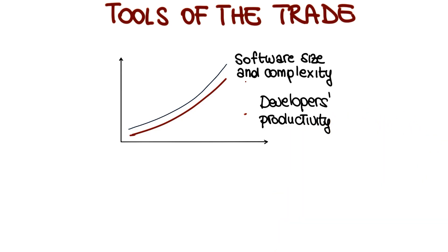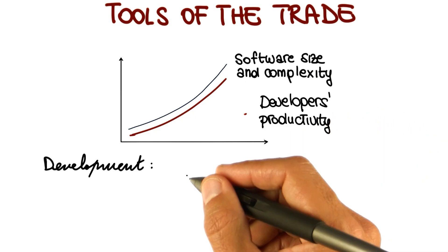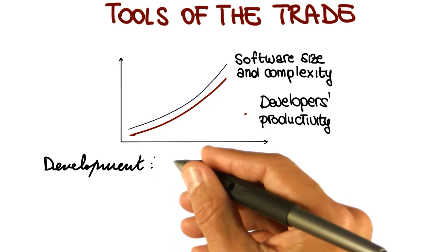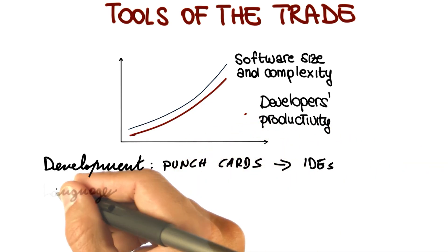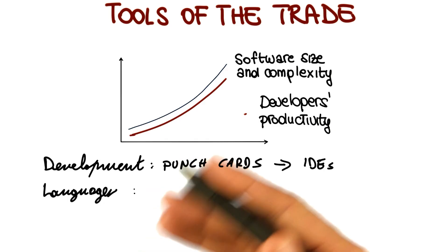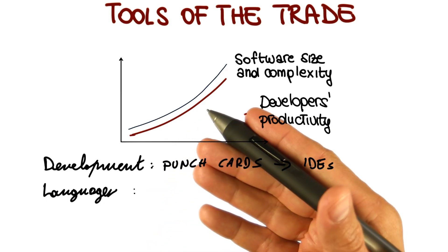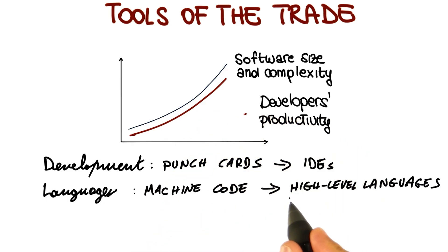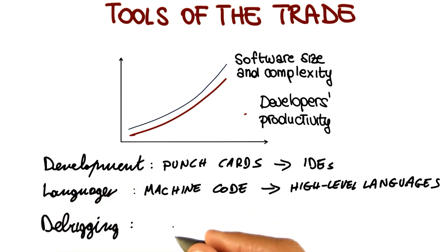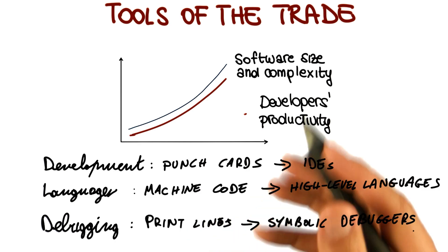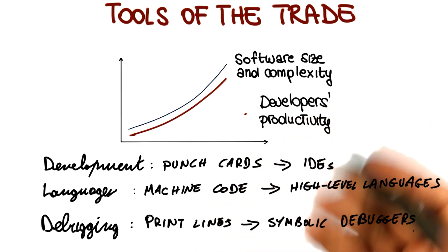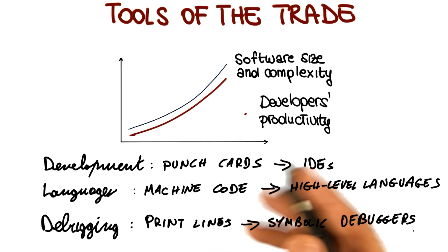Let me discuss some examples of how tools can improve productivity. For example, if we're talking about development, think about what kind of improvement it was to go from punch cards to modern IDEs. If we're talking about languages, think about how much more productive developers became when going from writing machine code to writing code in high-level languages. And finally, if we talk about debugging, which is a very important and expensive activity, moving from the use of print lines to the use of symbolic debuggers dramatically improved the effectiveness and efficiency of development.